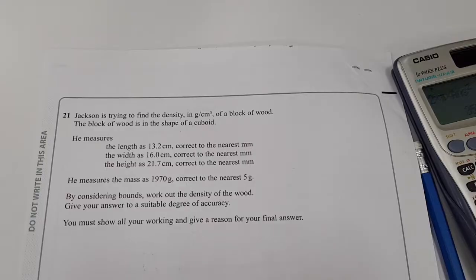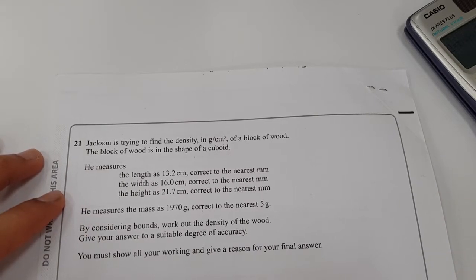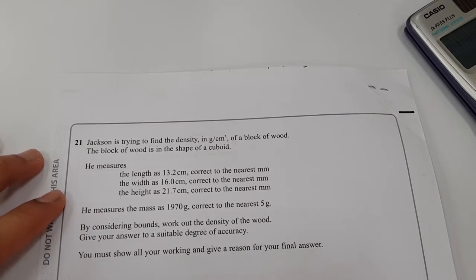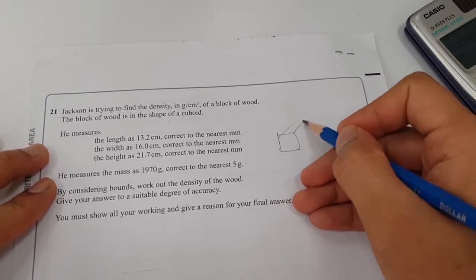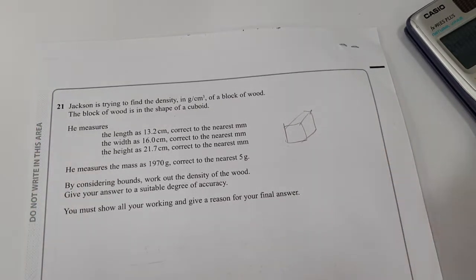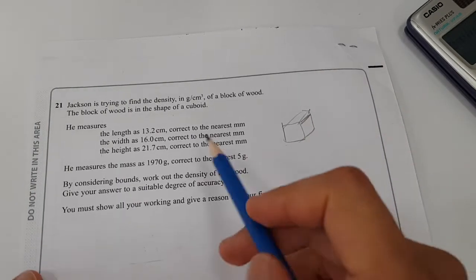Next, last question. Jackson is trying to find the density in grams per centimeter cubed of a block of wood, and the block of wood is in the shape of a cuboid. So we can draw it here. And then we have this information.